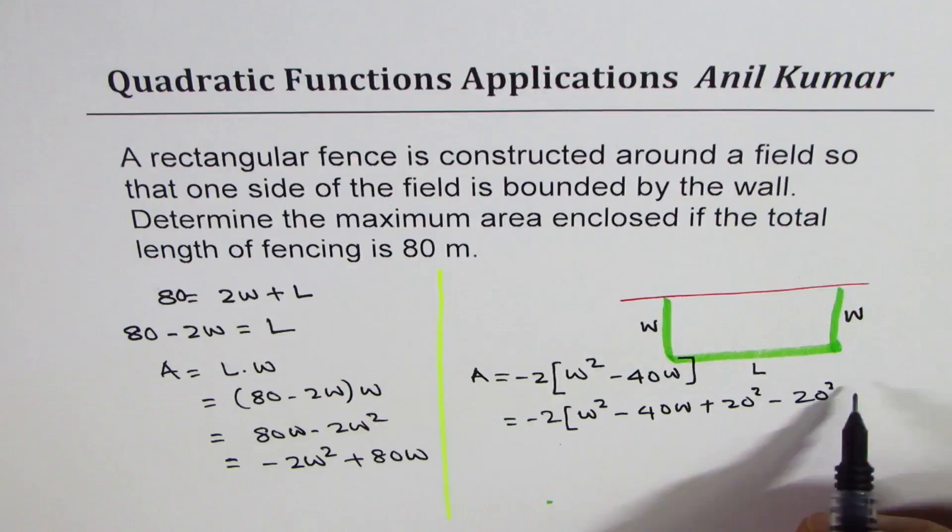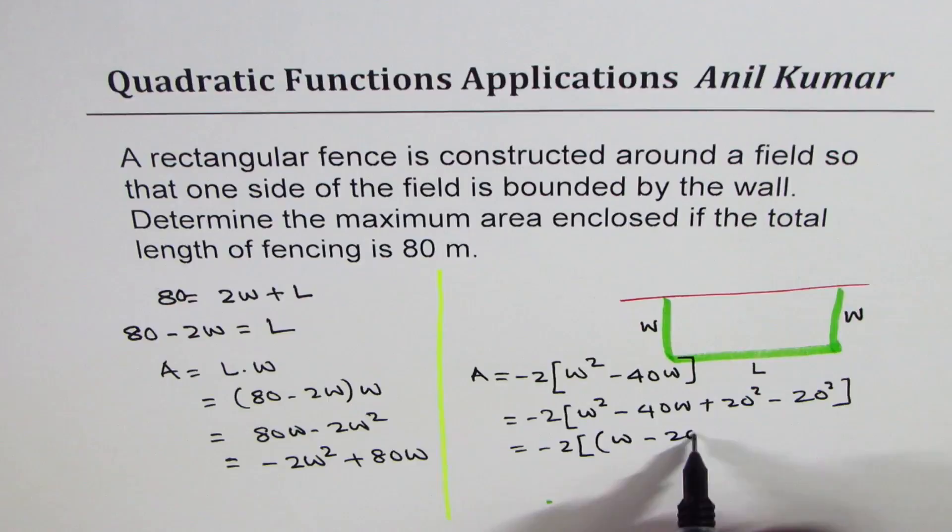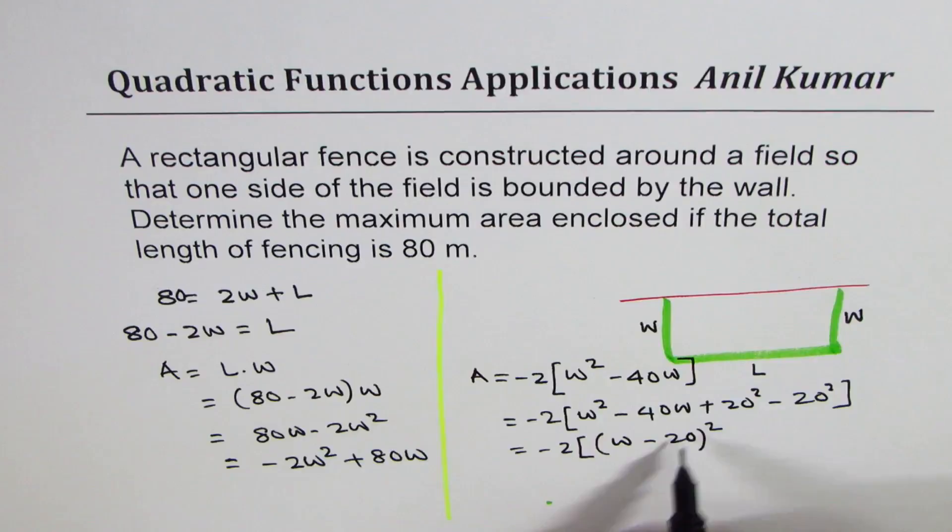That gives you minus 2 times [(W minus 20)² minus 400]. These three terms make a perfect square with negative sign. From here 20, from there minus 20 squared is minus 400.